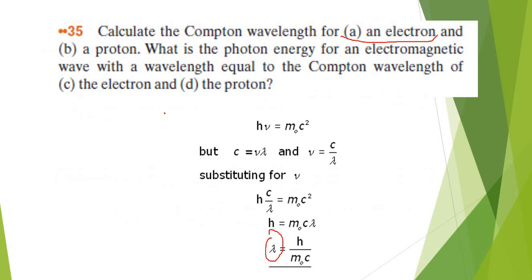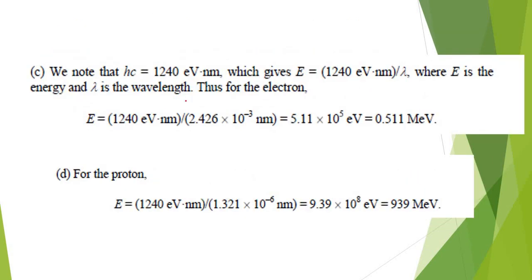Is it the question? They want us to find the photon energy if the wavelength equal to Compton wavelength of the electron and the proton. So you're going to use the same wavelength that you've got before to substitute it into the formula. You've already got this.